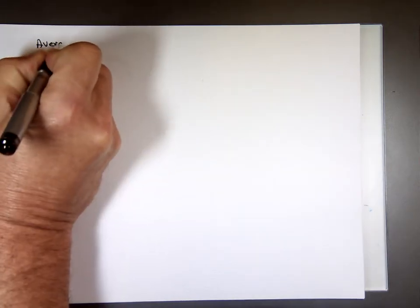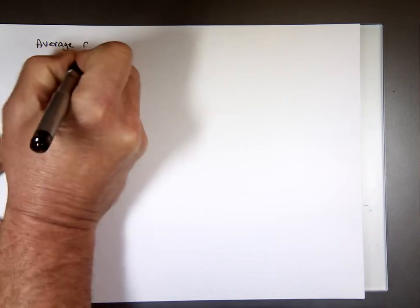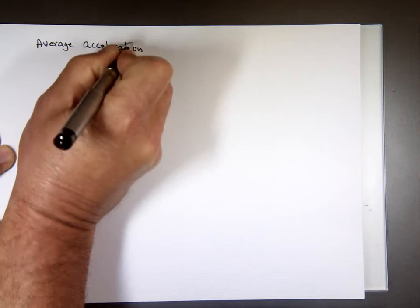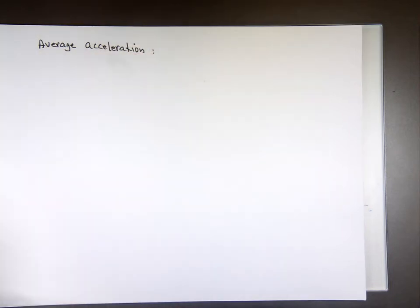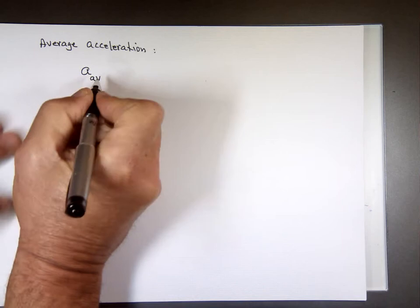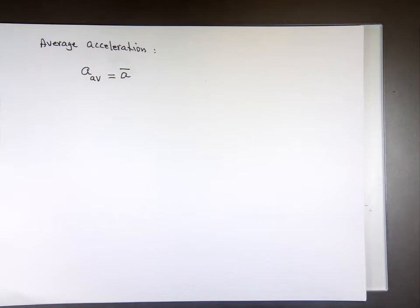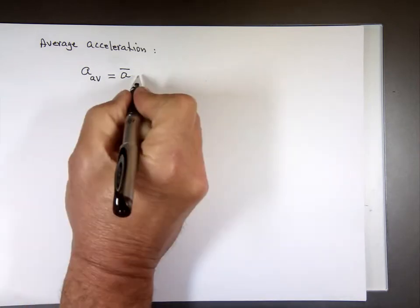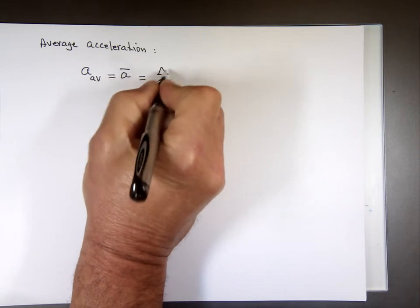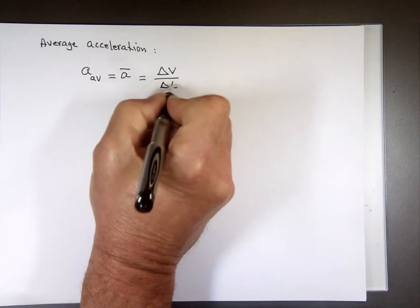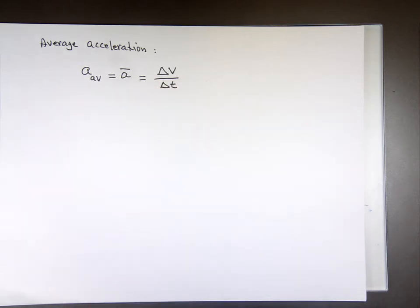So average acceleration — written as A-average or A with a line over it — that means average acceleration. Acceleration is defined as the change in velocity over the change in time. How fast is your velocity changing?